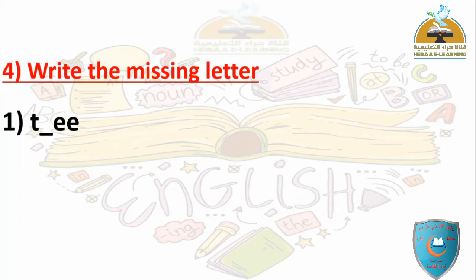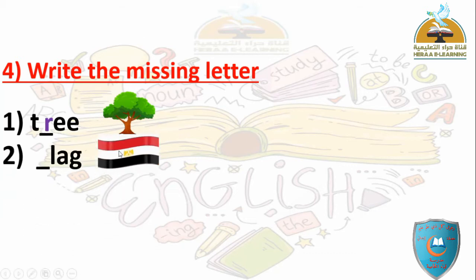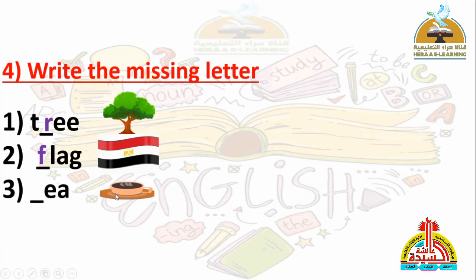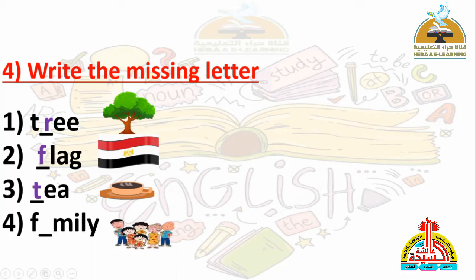Number four: Write the missing letter. Number one: What can you see? Tree. Spell: T-R-double E. The answer is O. Number two: Flag — علم. Spell: F-L-A-G. The answer is F. Number three: Tea — شاي. Spell: T-E-A. The answer is T. Number four: Family — عائلة. Spell: F-A-M-I-L-Y. The answer is A.